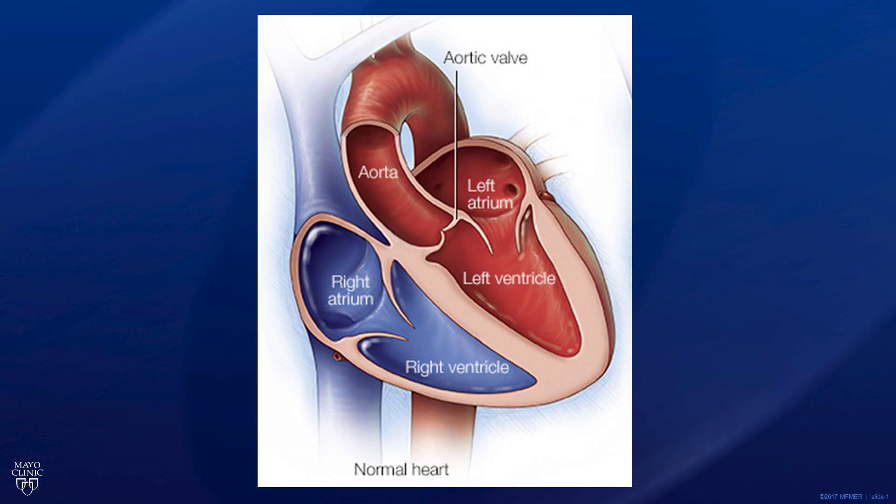As the heart relaxes, this valve then closes and prevents leakage of blood from the ascending aorta backwards into the heart. Over the course of one's lifespan, the aortic valve typically opens and closes an average of several billion times.